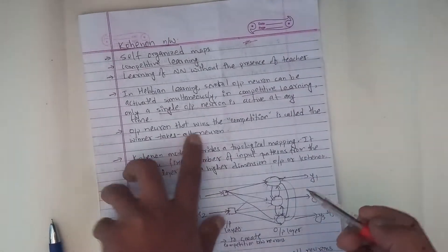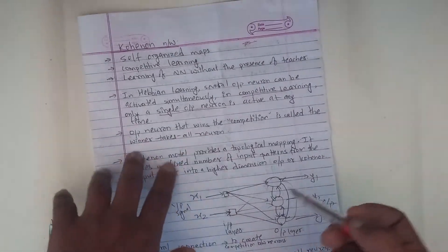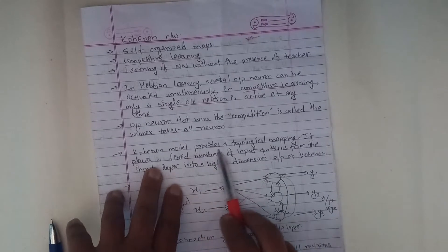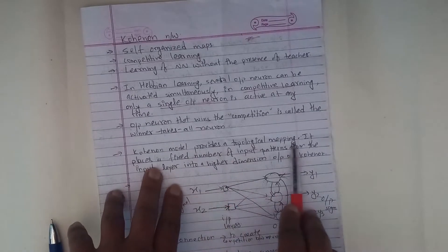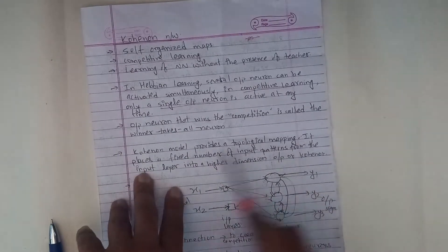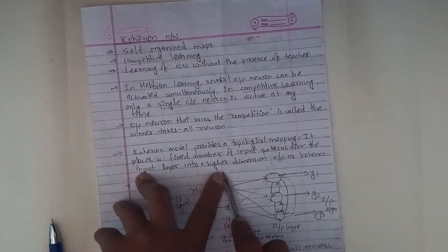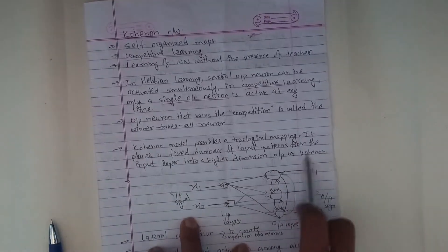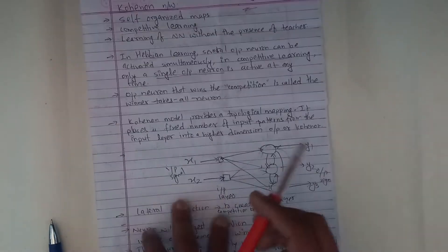The winner-takes-all neuron — it is called that neuron. The Kohonen model provides a topological mapping. It places a fixed number of input patterns from the input layer into a higher dimension output layer, or Kohonen layer.